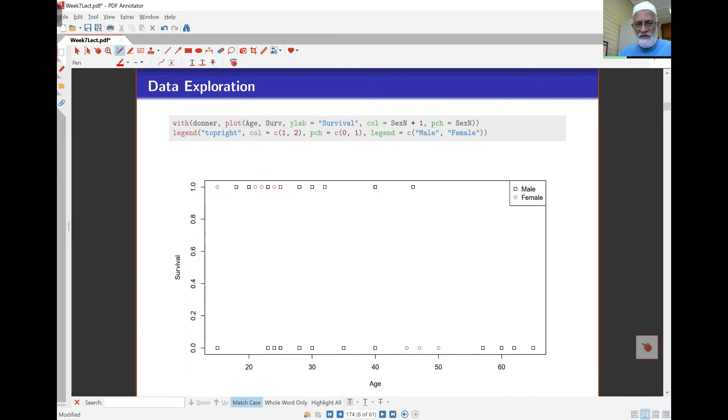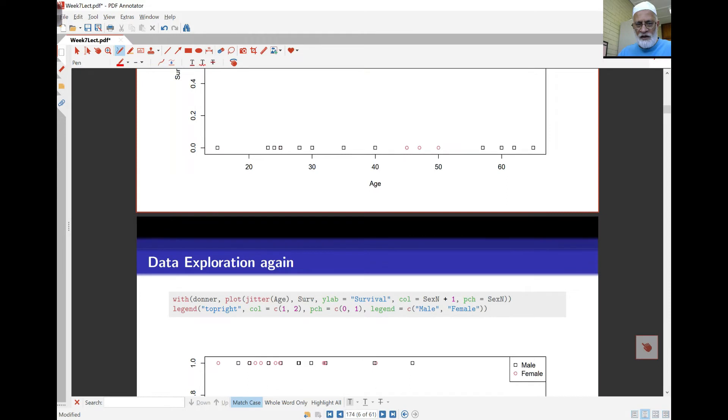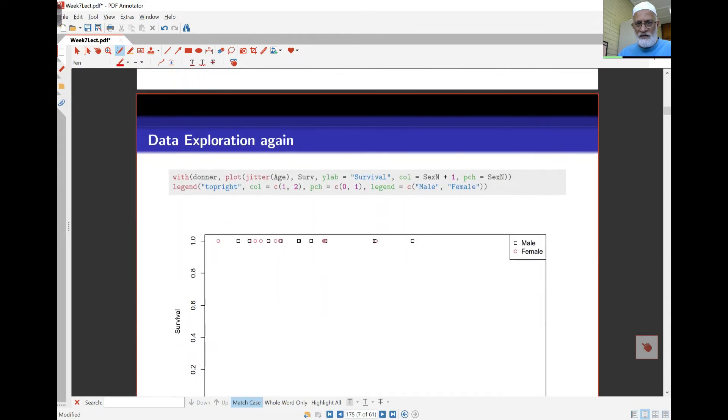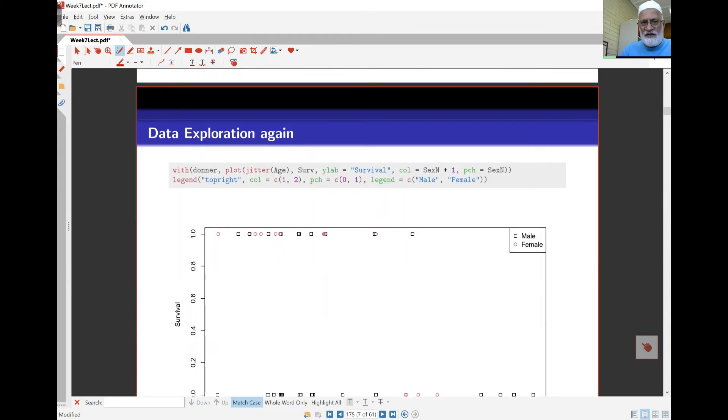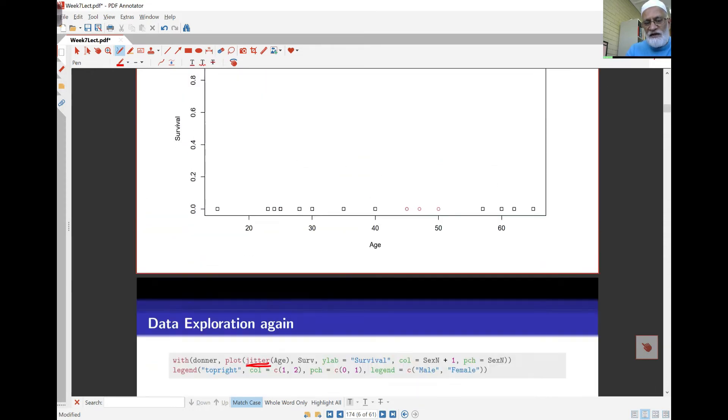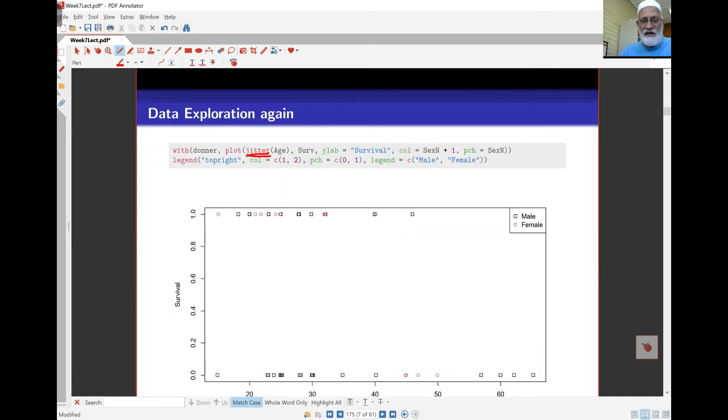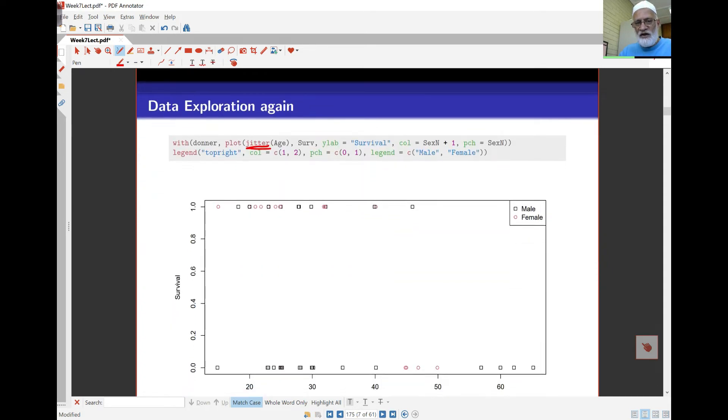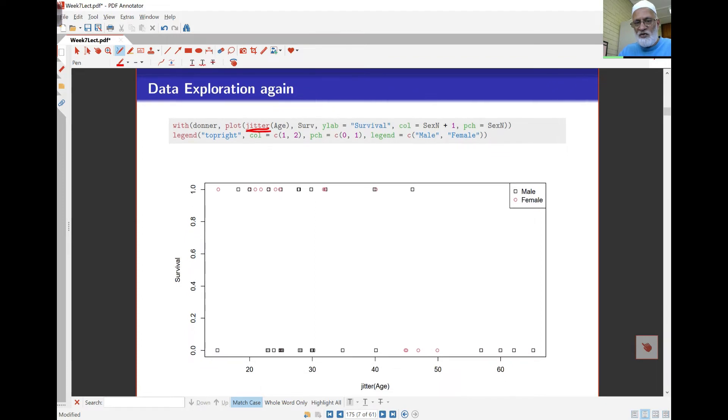You might not see much from this graph, but if I go to the next graph you will find the same graph with a little bit of difference. We have this extra thing called jitter which we didn't have in the last graph.